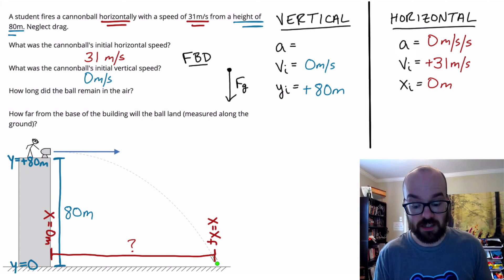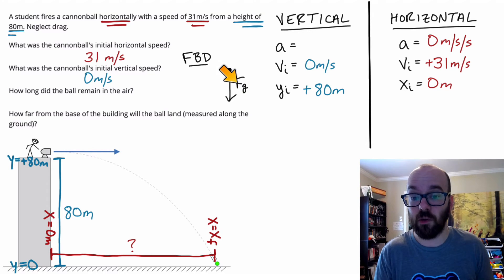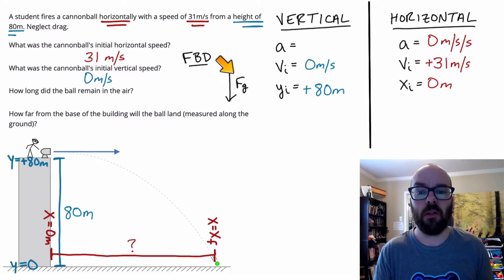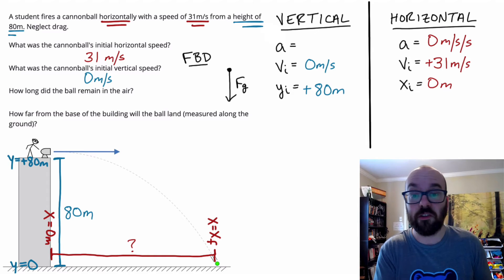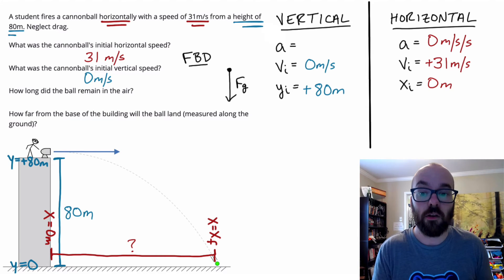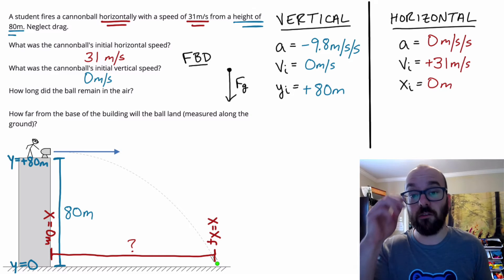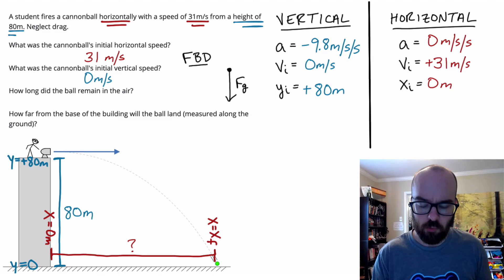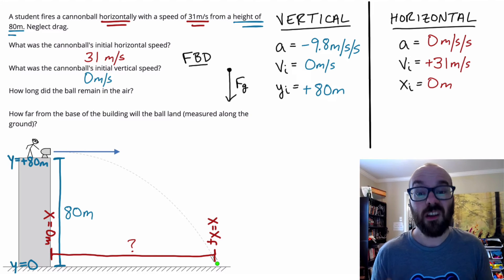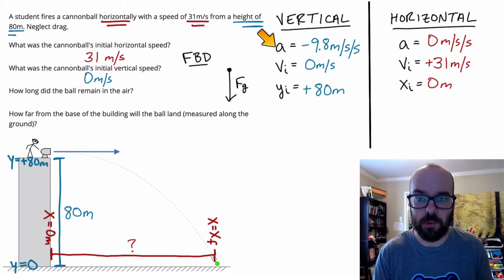Vertically, that's not the case, because we have an unbalanced force — there's nothing to balance out gravity. So we do have a vertical acceleration. As long as we're on Earth, that acceleration is negative 9.8 meters per second every second. So we now have all the variables we need to get started. One of the hardest things in these problems is just filling out all these initial variables.